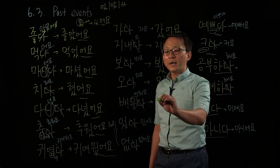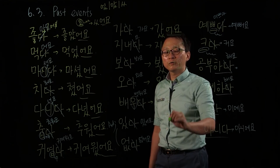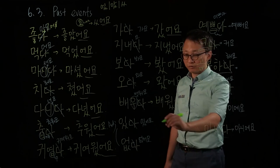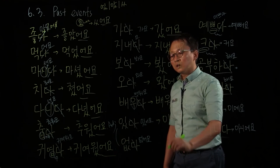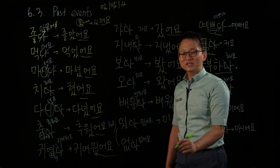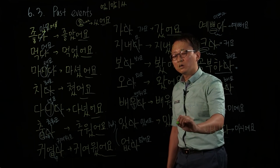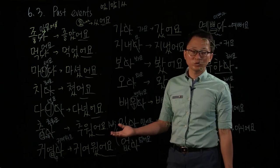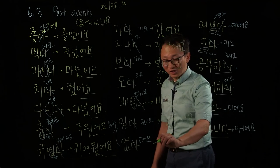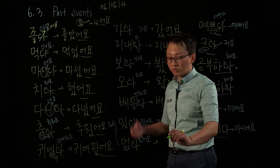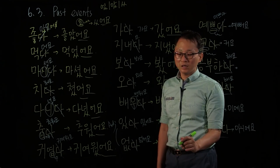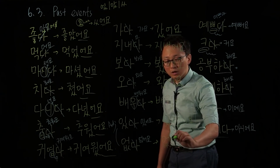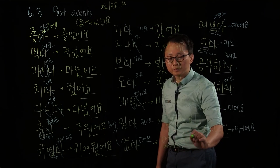배우다 — to learn. 배워요 is the form. Add ㅆ어요: 배웠어요. Very easy — if you know the present form, then past tense form is really easy. 있어요 — 돈 있어요. Do you have money? Add ㅆ어요: 있었어요. 어제 돈이 있었어요 — I had some money yesterday. 지금 없어요, not anymore. 없어요 → 없었어요. 친구가 집에 없었어요 — he was not home yesterday.